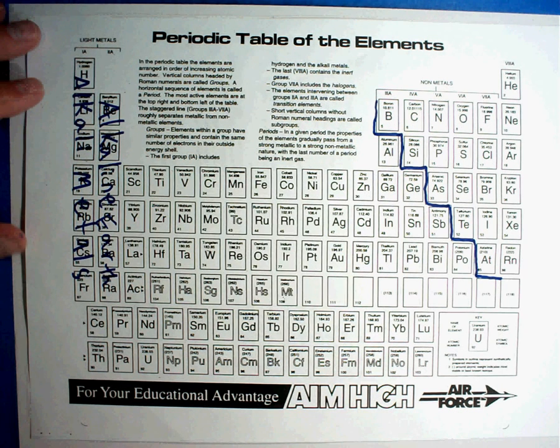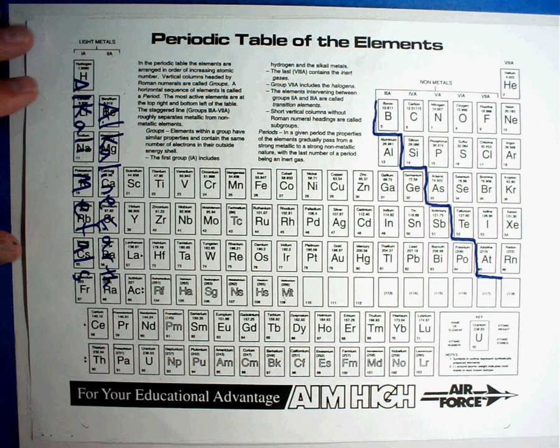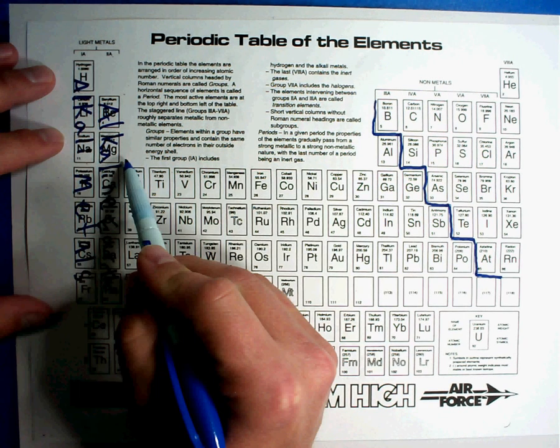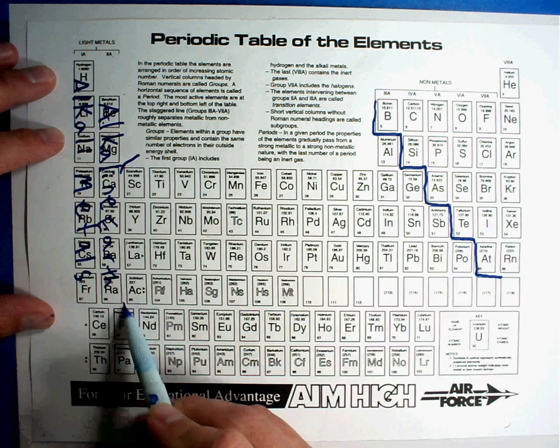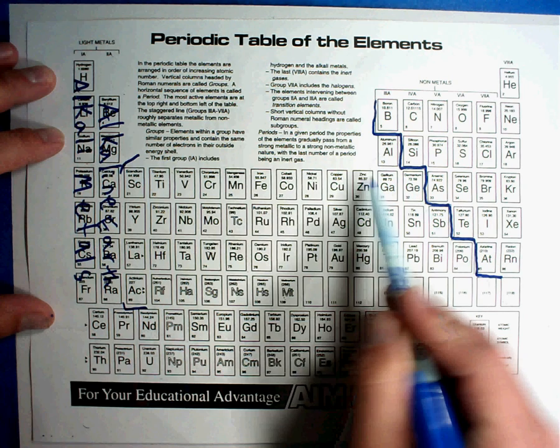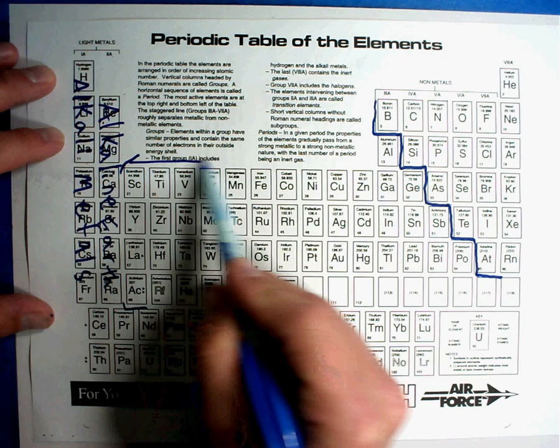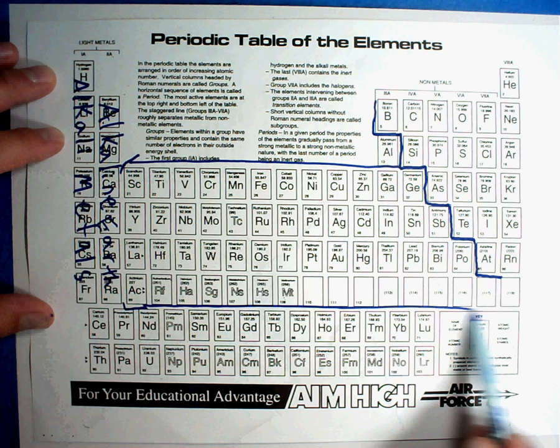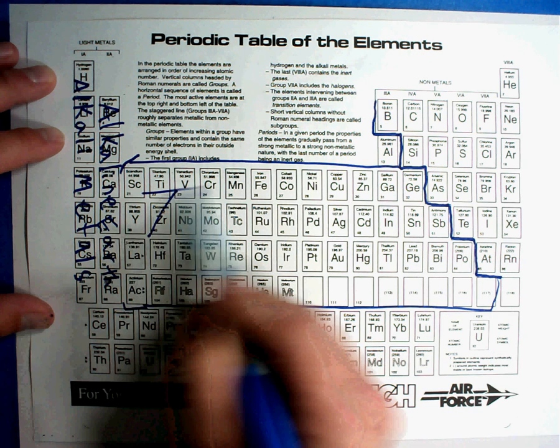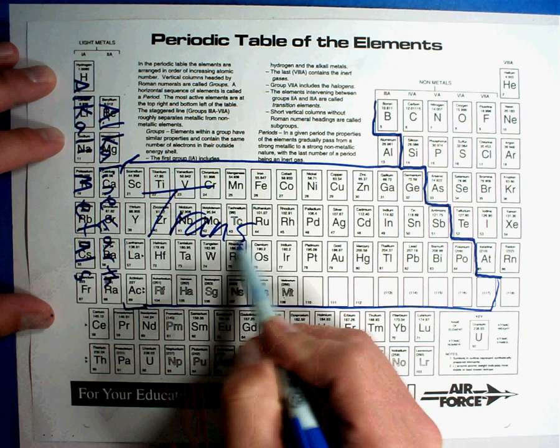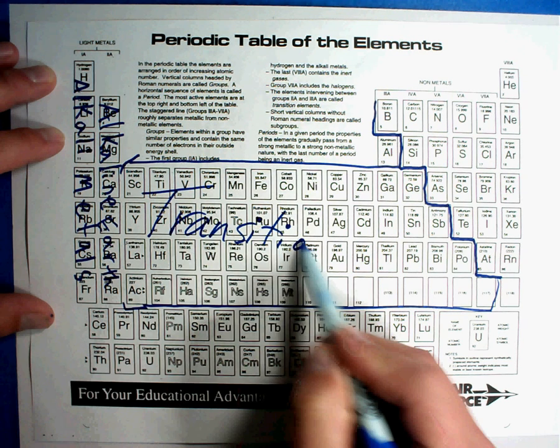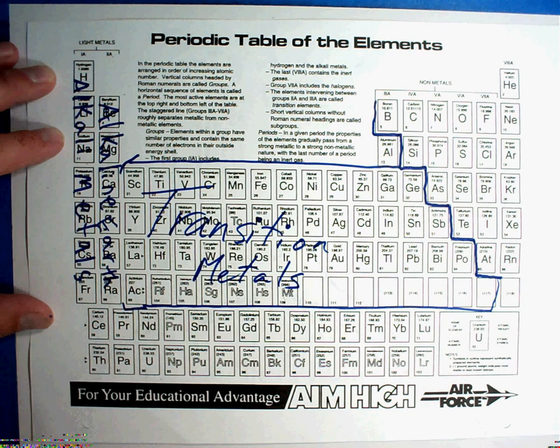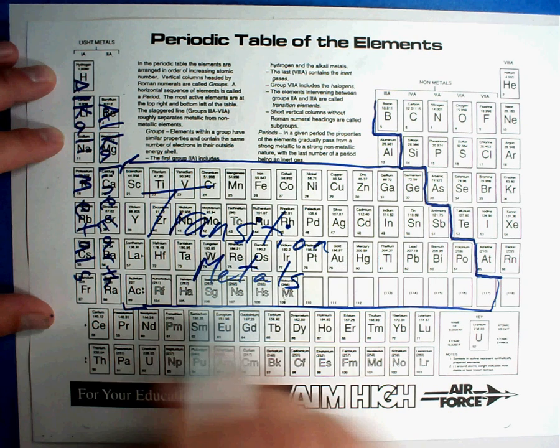The next one is called the alkaline earth metals. The middle of the periodic table from here all the way to the stair steps. So we're going to go all the way to the stairs in both sections. These are called the transition metals. You'll notice the columns are way shorter than these other two. They're very tall. These are called transition metals.